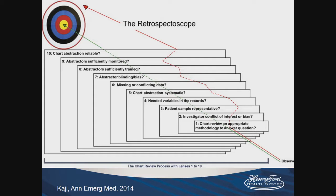This is actually a figure from a publication by Amy back in 2014 in Annals of Emergency Medicine. Not that you can necessarily see every component here, but we start with observing data, and we hope to look at chart review and get right to the target of what the real data shows. But there are all these biases and errors that investigative teams can have, which really takes you off track, and you miss the target — essentially the data you collect doesn't really reflect what actually happened to patients.